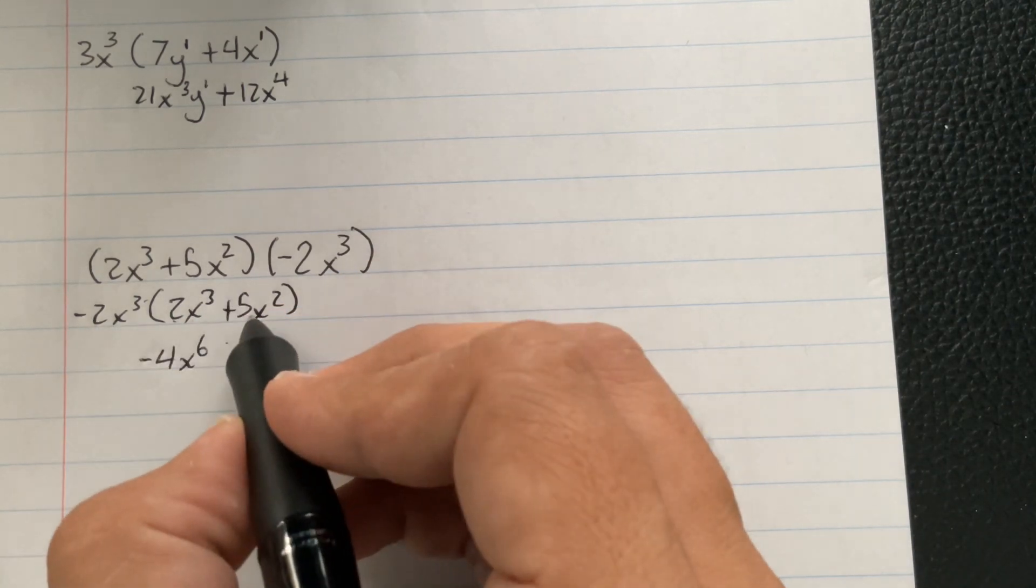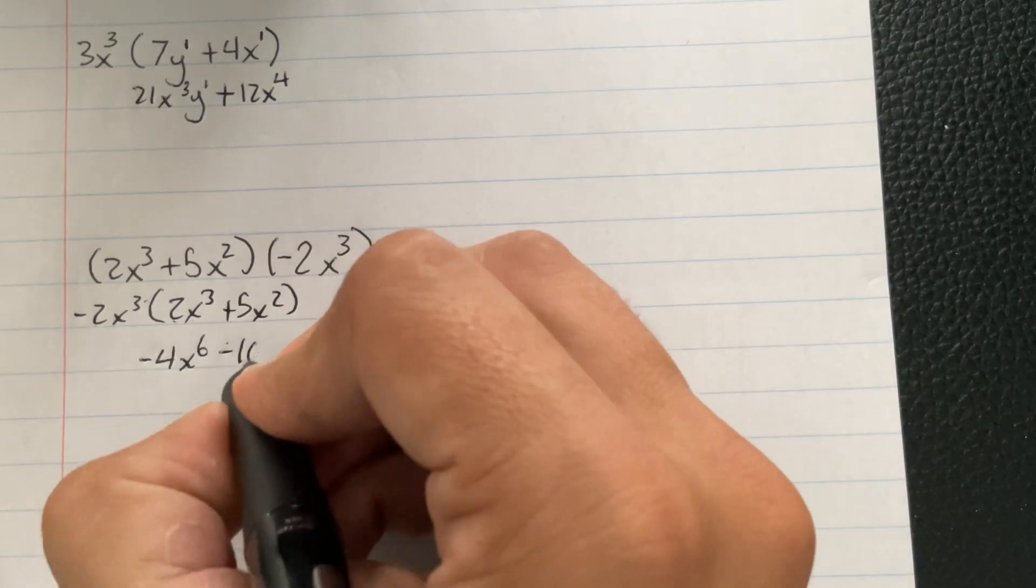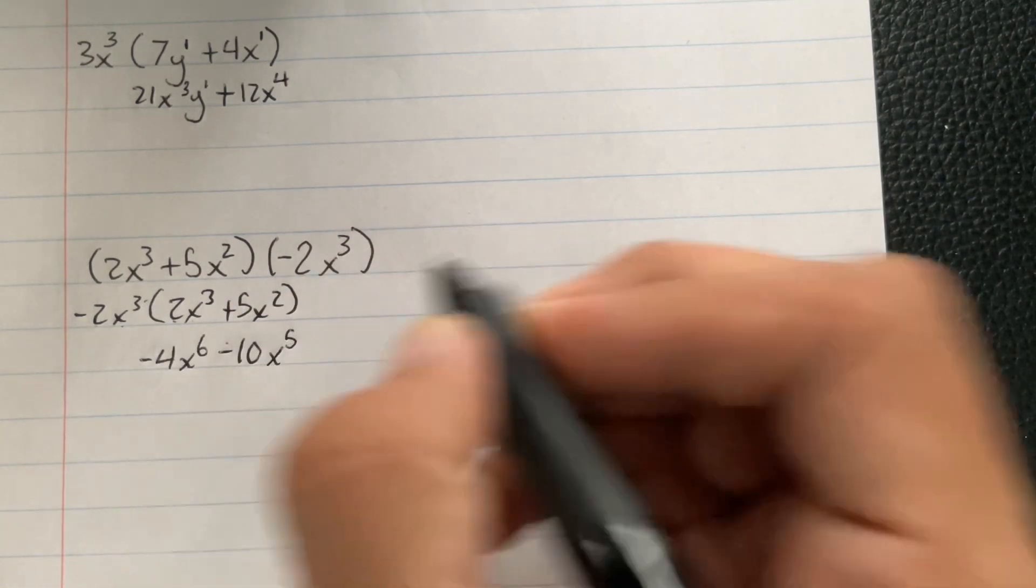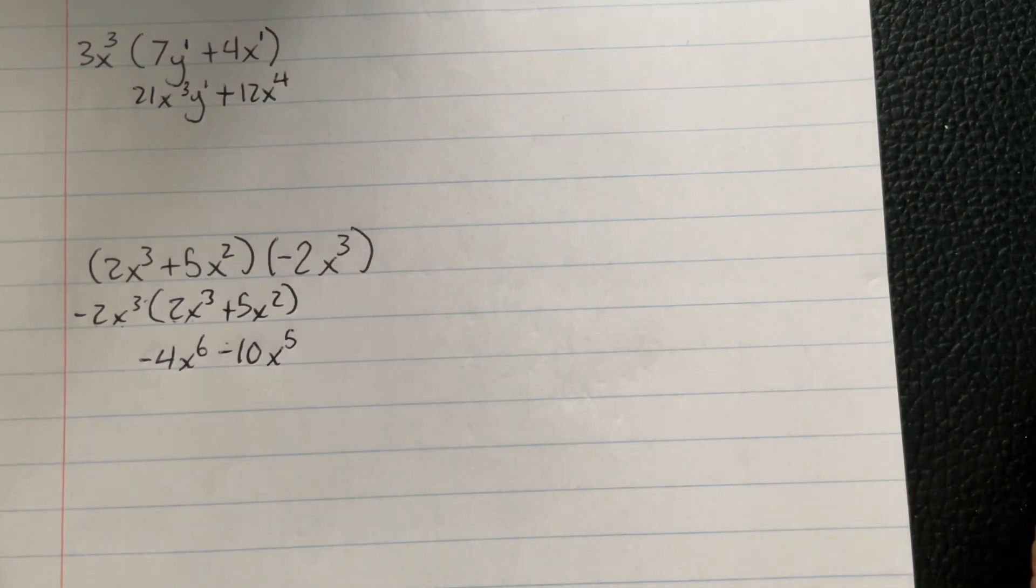Now it's going to be negative 2 times the 5. That's going to make negative 10. x³ and x² is going to make x⁵. And we're done. Good luck.